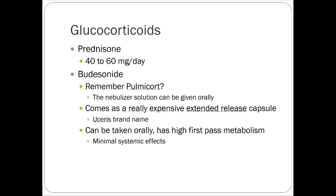On glucocorticoid options: prednisone is started at 40 to 60 mg per day and tapered once symptoms are controlled. Budesonide — the same drug as Pulmicort inhaler — was originally given as a swallowed nebulizer solution to achieve topical corticosteroid effects in the gut. Oral capsule formulations eventually replaced that approach. The brand name is Uceris; there are some generics, but it isn't a cheap drug given limited manufacturers.